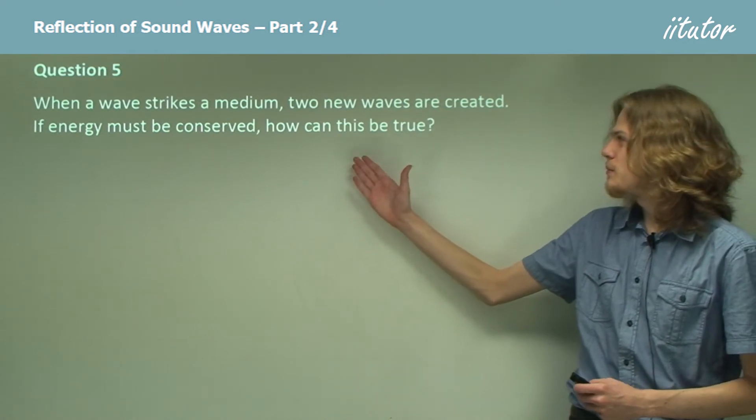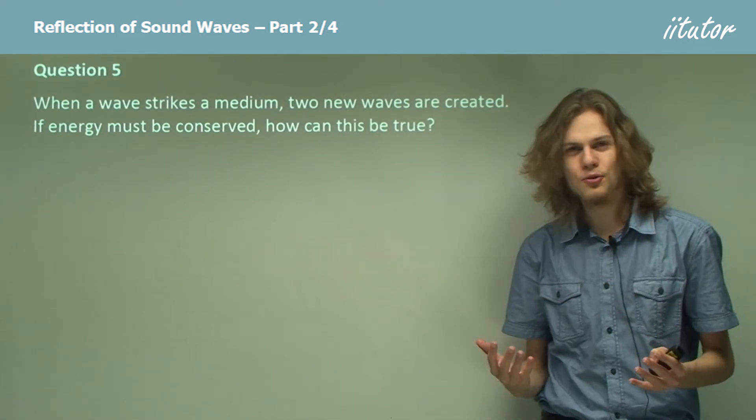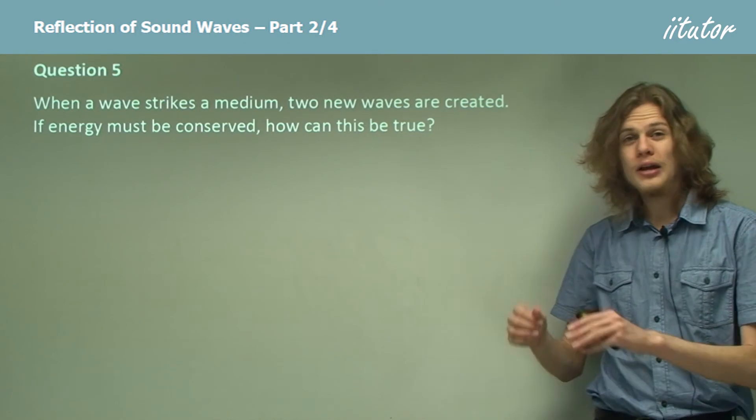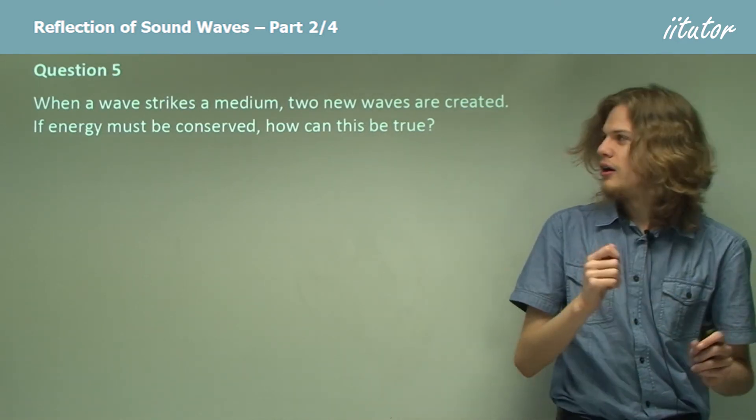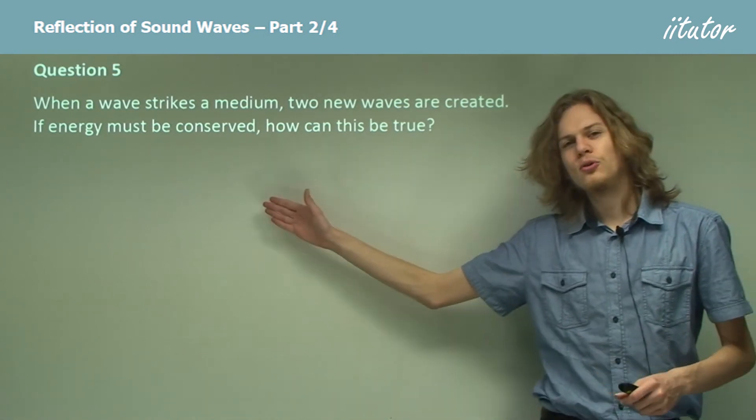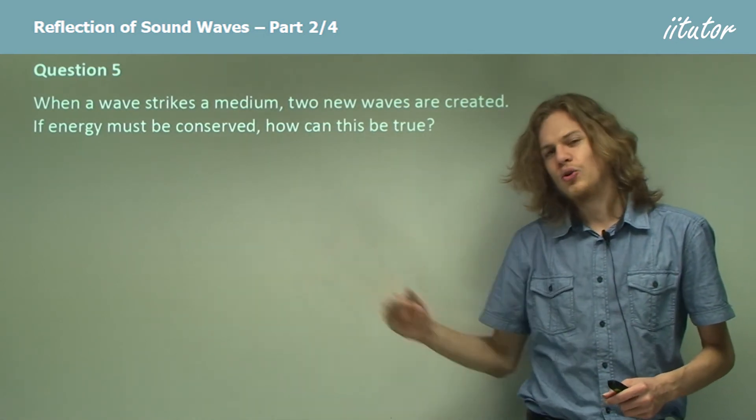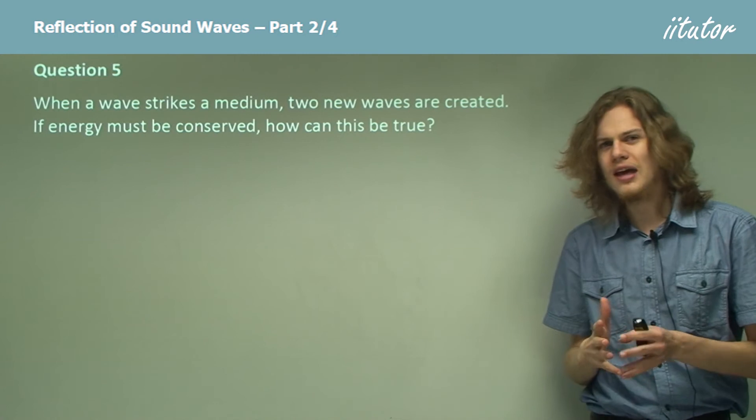When a wave strikes a medium, two new waves are created. So now we have two waves where we used to only have one wave. But we also know that we can't create or destroy energy. So how is it that we start off with one wave and end up with two?